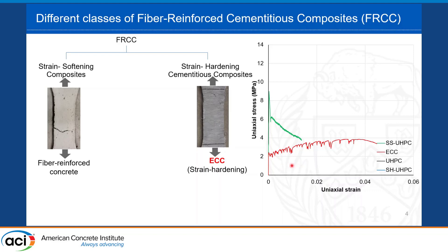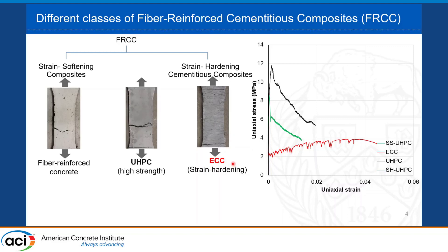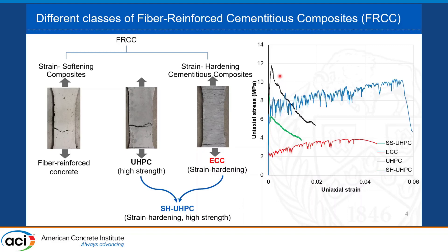Strain hardening materials can achieve very large strain capacities up to 3 or 4 percent through multiple cracking behavior. ECC is an example. UHPC is somewhere in between these two classes — it provides some strain hardening due to the good bond between fibers and matrix, but it doesn't provide the same strain hardening behavior as ECC. In recent years, efforts have been made to combine the high strength of UHPC with ECC's strain hardening behavior to produce a strain hardening UHPC mix.